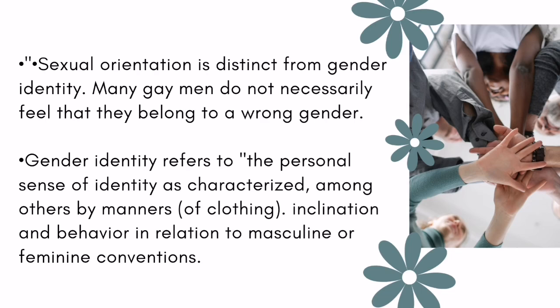Sexual orientation and gender identity are two separate things. Sexual orientation is about who a person is attracted to, such as being attracted to someone of the same or a different gender. Gender identity, on the other hand, is about a person's internal sense of their own gender — whether they feel like a man, a woman, or something else entirely. Being gay means being attracted to someone of the same gender, but it doesn't necessarily mean that a person feels they belong to the opposite gender.